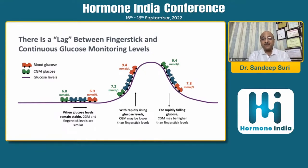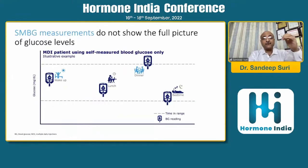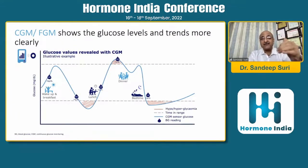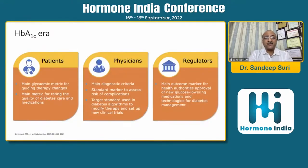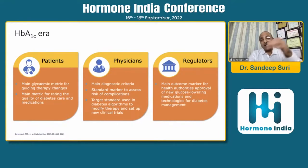SMBG gives you sporadic snapshot values, but what is happening between values - hypos and hyperglycemia - you get from CGMS. Regarding HbA1c, the gold standard of chronic hyperglycemia: for patients it guides treatment quality; for physicians it has diagnostic value, links to risk of complications, and guides algorithmic treatment changes; for regulators, drug approval is based on HbA1c and it provides the efficacy model.